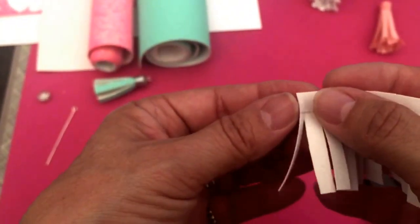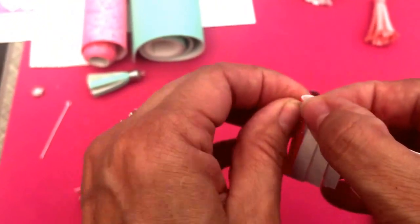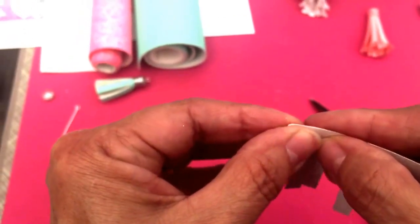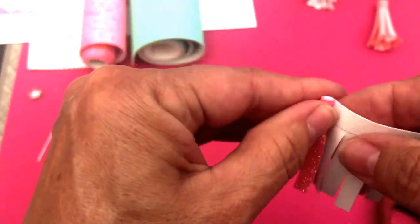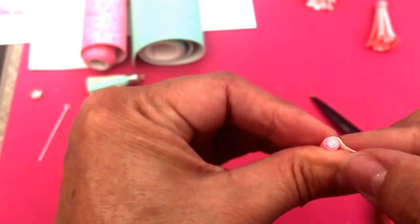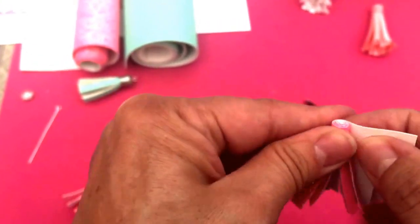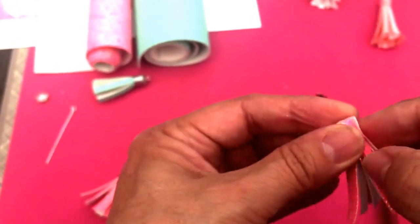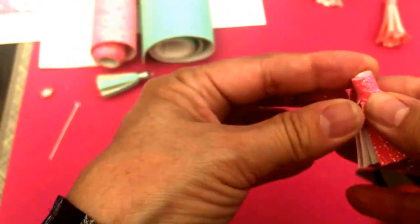Okay now I have it all cut and I'm going to start rolling from one end and do it as tightly as you can. Start rolling it, it's looking pretty good and you don't have that much to roll so it goes pretty easy.